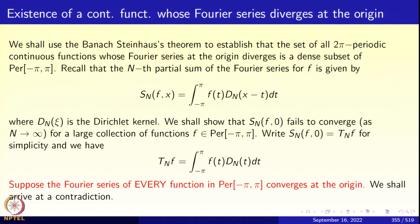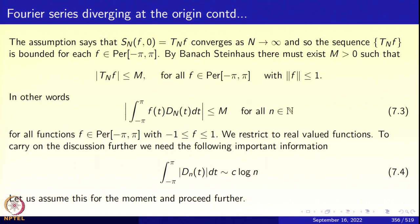Suppose that the Fourier series of every continuous periodic function converges at the origin — we will arrive at a contradiction. If that happens, then S_n(f)(0) converges to f(0) as n tends to infinity, meaning T_n(f) converges for every choice of f. In other words, the sequence T_n of bounded linear transformations converges pointwise. So by the Uniform Boundedness Principle, it will be uniformly bounded, and we will arrive at a contradiction.